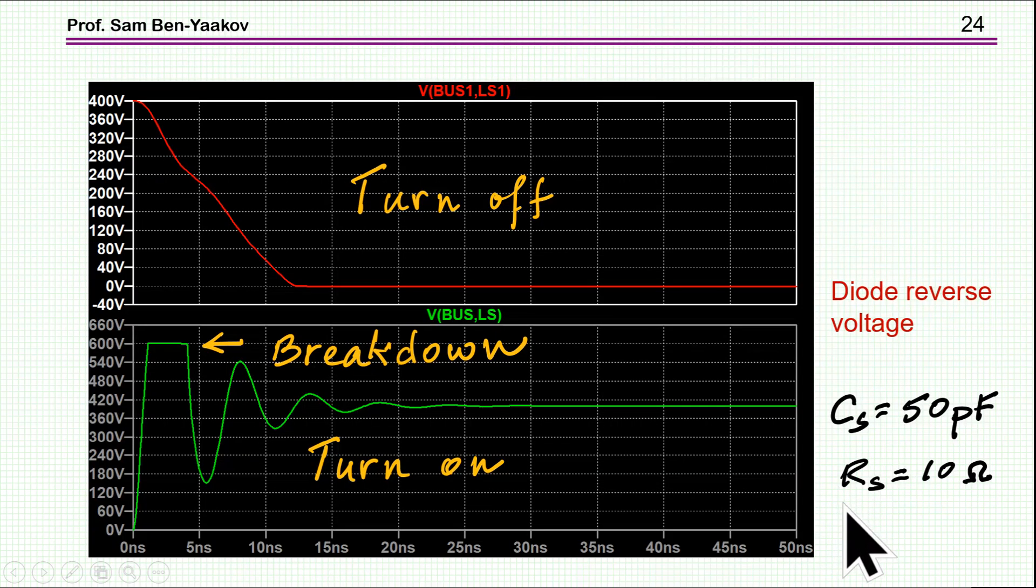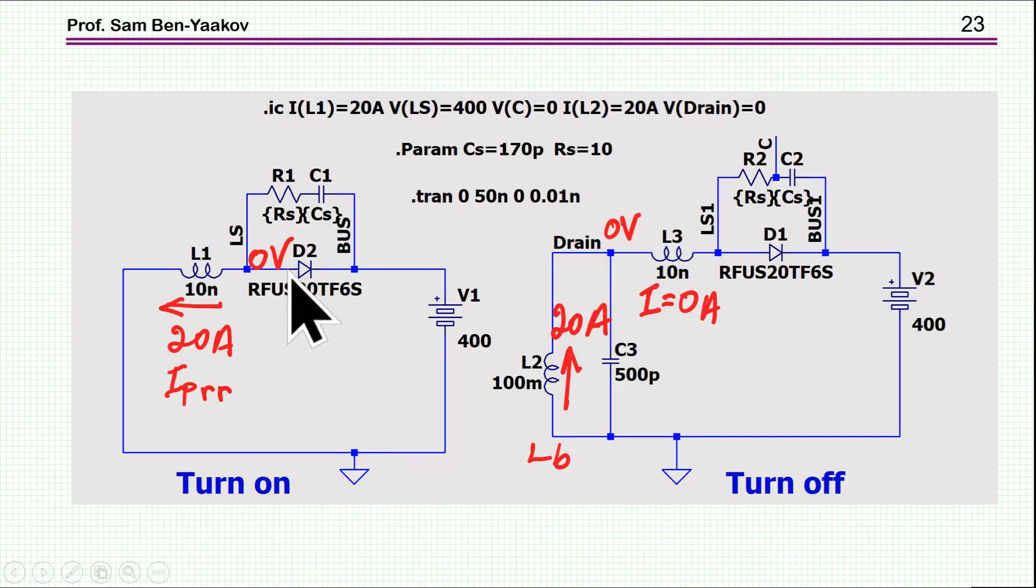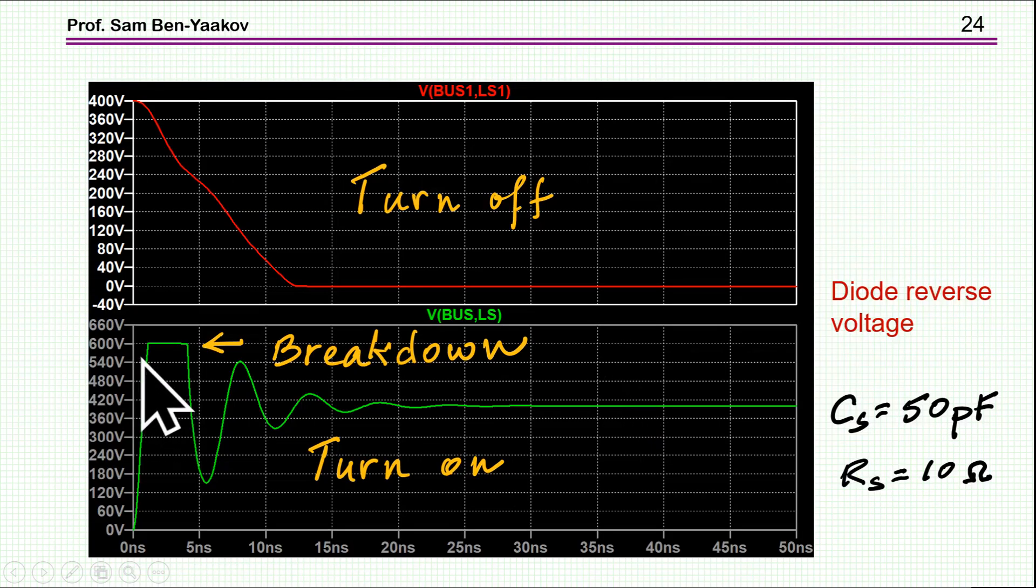And here is an example. In this case, I've chosen C sub S small, smaller than I've calculated. I've calculated 170, and this is 50. R S is about 10. And turn off is pretty good, but the turn on is bad. This is when we have the reverse recovery. The voltage across the diode is just too high, and the model, the SPICE model here, SPICE model of this, is actually including a breakdown at 600 volts, a 600 volt diode. So we have here like a breakdown, like a zener of the diode. This is certainly not good.